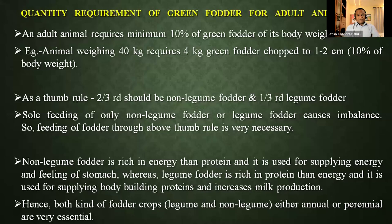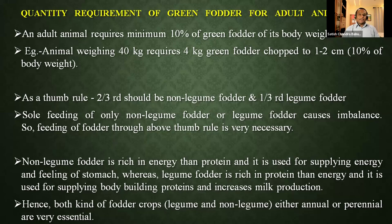Adult animals require around 4 kg of finely chopped, 1–2 cm fodder as green. As a thumb rule, two-thirds should come from non-legumes and one-third from legumes, and sole feeding from either should not be done. To increase dry matter intake, try to reduce moisture — freshly cut fodder has 85–90 percent moisture; drying in the sun to 40 percent or less increases dry matter intake. More dry matter intake means better nutrient availability and better digestibility.